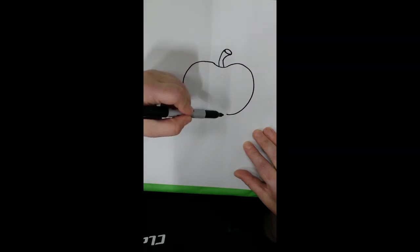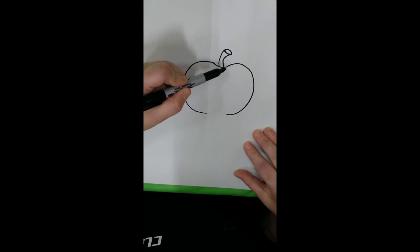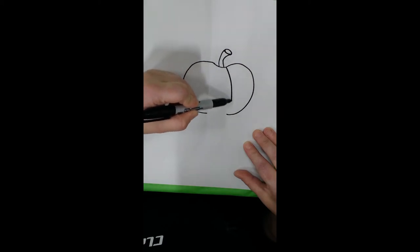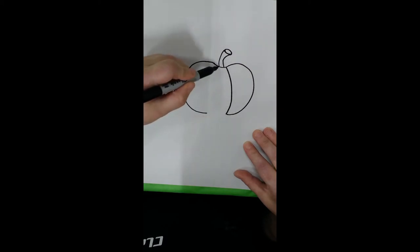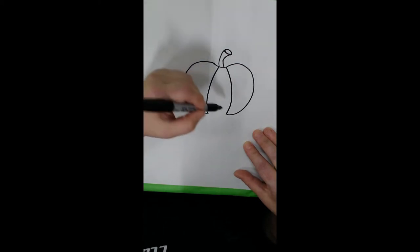Once again we'll draw two curved lines like flattened C's for the lines within our pumpkin, one on that side and one on this side. And then we'll draw another curve to make the bottom of our pumpkin.